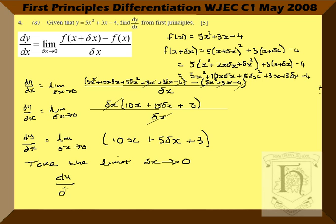The derivative is then 10x. Of course, that's tending towards 0, so in the limit, 10x + 3 is our derivative. That was worth 5 marks and was part A of the question.